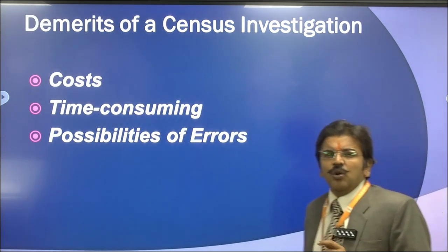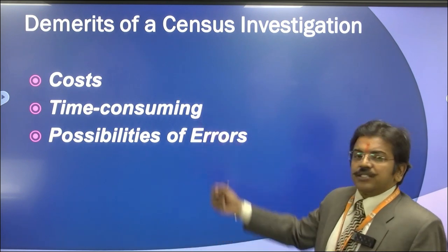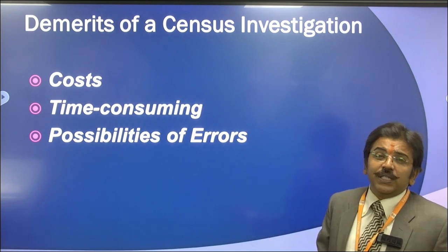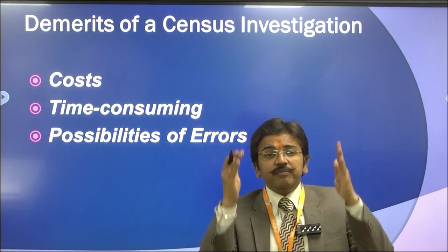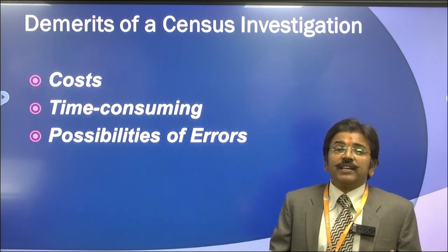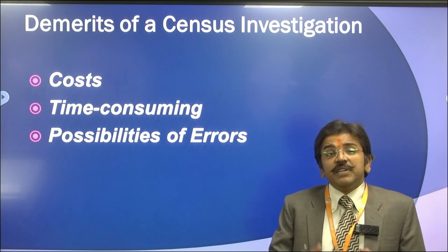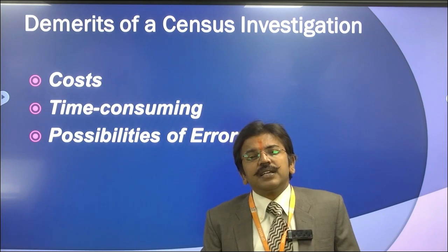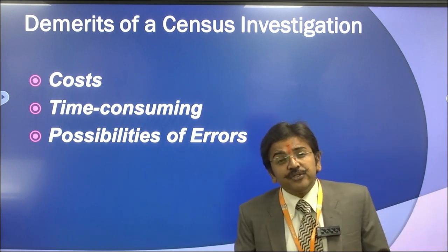Now, the demerits of census investigation — why do people avoid the census method? First, it is a very costly and time-consuming process. You have to go to each and every individual, frame schedules, frame questionnaires, and collect data accordingly. Cost and time are the two factors that make census unsuitable for every research. Additionally, there is a possibility of errors if a person taken as a sample unit does not cooperate or take interest in your study.